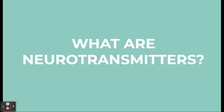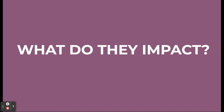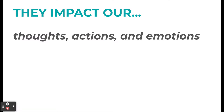We also talked about neurotransmitters — there are lots of different kinds. A neurotransmitter is the body's chemical messengers. The important part is 'chemical.' Neurons are not chemical messengers — they're electrical. Neurotransmitters balance or imbalance the levels of chemicals in our body and transmit messages between neurons or from neurons to muscles. They impact our thoughts, actions, and emotions, which is why many are related to things like memory, depression, and anxiety.